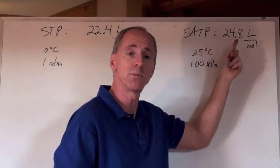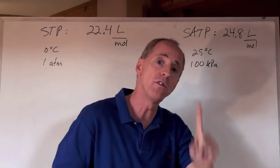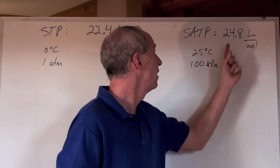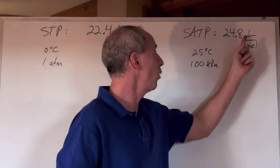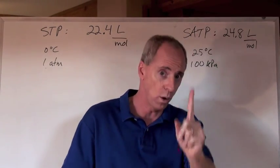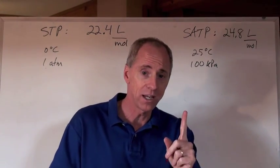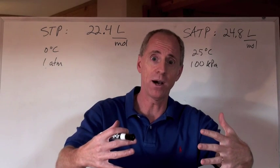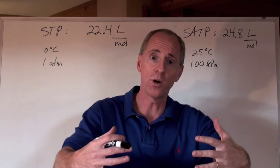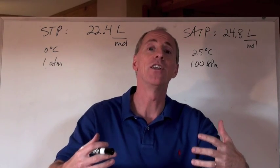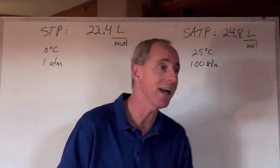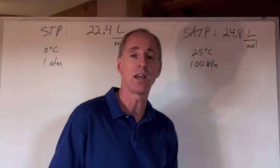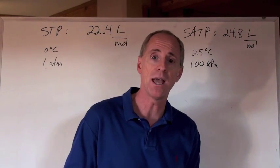25 degrees Celsius and 100 kPa — not quite one atmosphere of pressure — is called Standard Ambient Temperature and Pressure (SATP). The molar volume of a gas at SATP is 24.8 liters for one mole. If you have one mole of a gas occupying 24.8 liters, you know you must be at 25°C and 100 kPa.